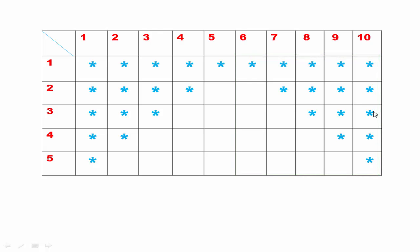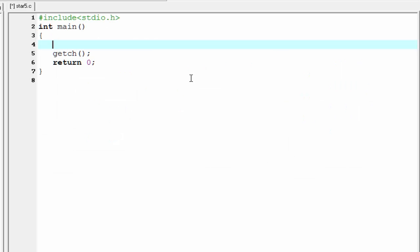As you can see, the number of stars and spaces printed in both of the two portions are equal. The only difference is that in the first portion, stars are printed first and then spaces, but in the second portion, spaces are printed first and then stars. Let's move to the coding.